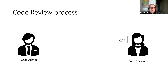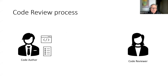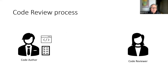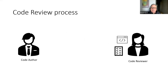The code reviewer is the gatekeeper. She looks at the change set and the change list, and decides if it's good enough. If it is, thumbs up — merge it with the main branch. If not, she documents things that need to be addressed and sends it back to the code author, who addresses each comment — either making changes or explaining why something is intentional. Then the author sends it back for another review cycle.